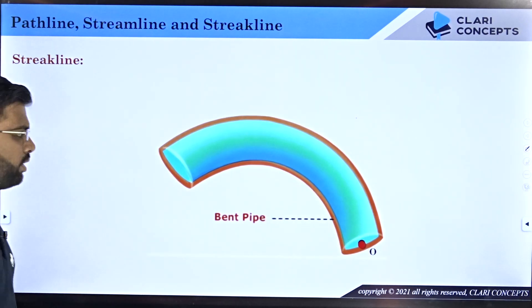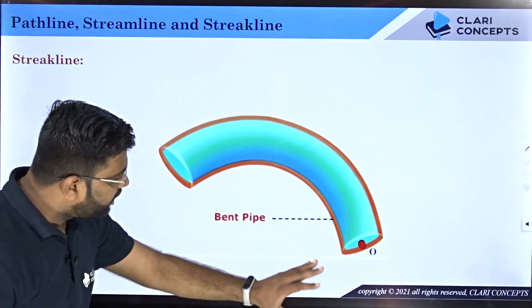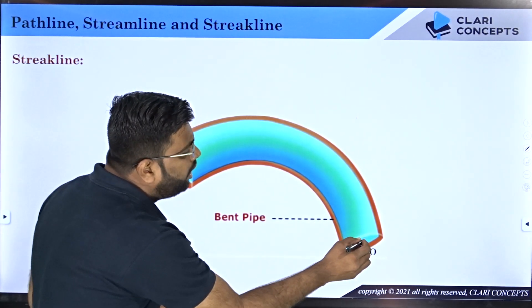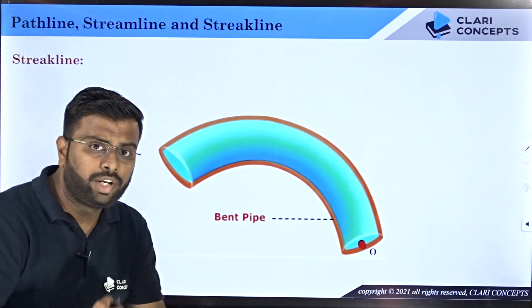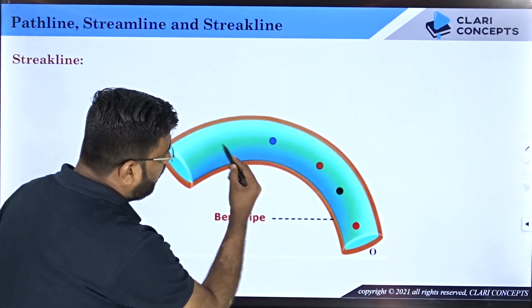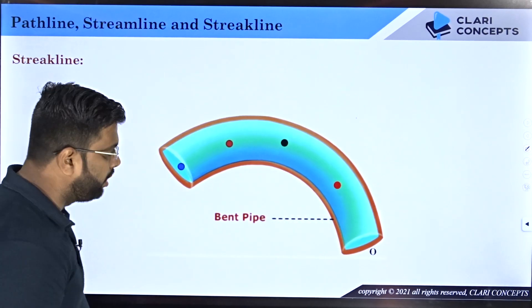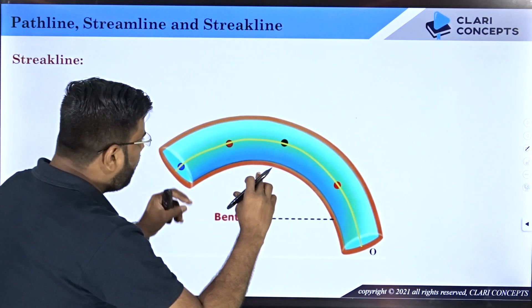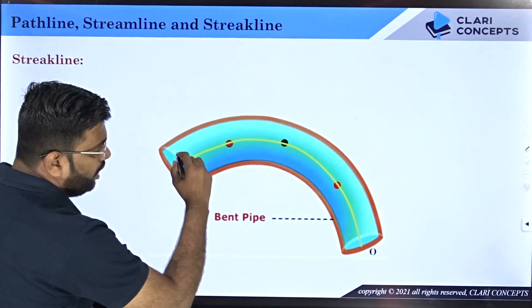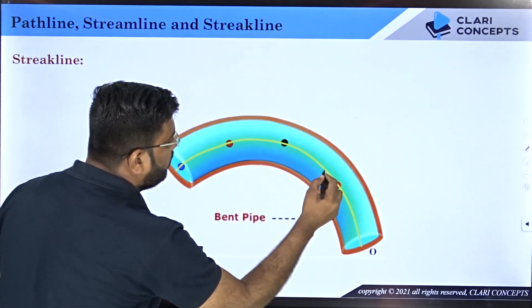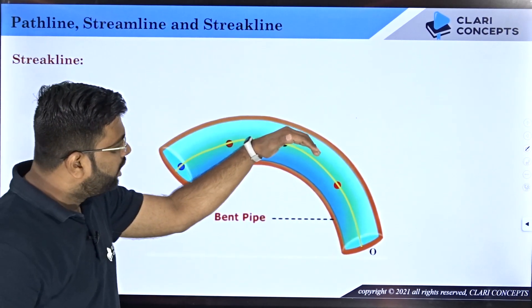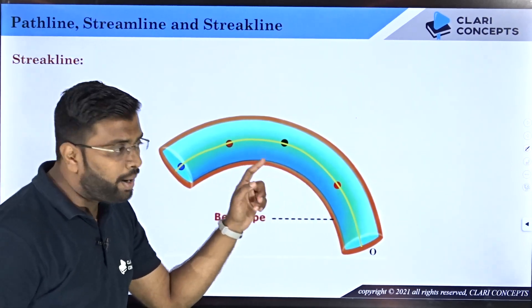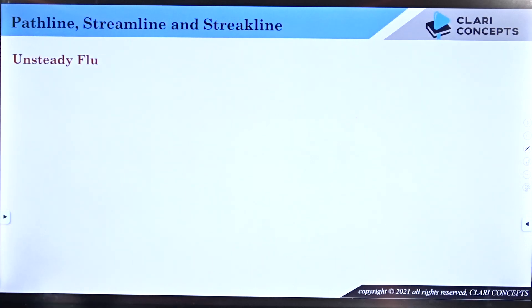Let me explain with the example of the same bent pipe. There are four different fluid particles, and if I show the animation, all four particles pass through point O but at different instants of time. Blue color particle came first, then red, then black, then another. At some instant I take a photograph, and in this photograph all four particles are at a certain orientation. Drawing a line joining these four particles shows the streakline. All four particles traveled from point O earlier, but right now they are located at different points in space — they have all passed through point O. This is the streakline.